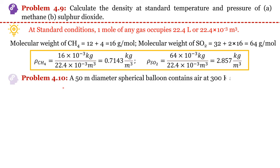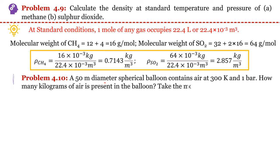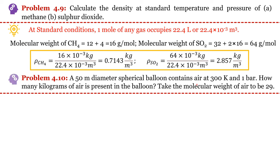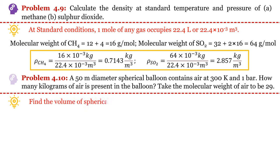Problem number 4.10: a 50-meter diameter spherical balloon contains air at certain temperature and pressure. How many kilograms of air is present in the balloon? We can use the ideal gas equation for that. Volume should be known, and since the balloon is spherical, we can find out the volume of the sphere, and that volume will become the volume of air.